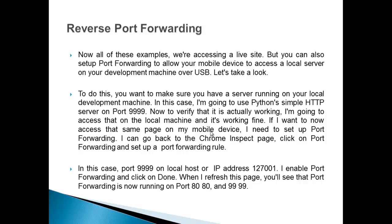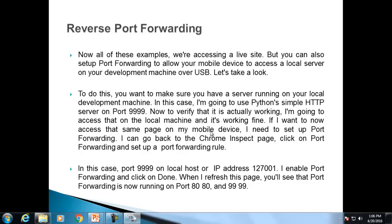To access that same page on my mobile device, I need to set up port forwarding. I can go back to the Chrome inspect page, click on port forwarding, and set up a port forwarding rule — in this case port 4999 on localhost, IP address 127.0.0.1. I enable port forwarding and click done. When I refresh the page, you will see that port forwarding is now running on port 8080 and 9999.